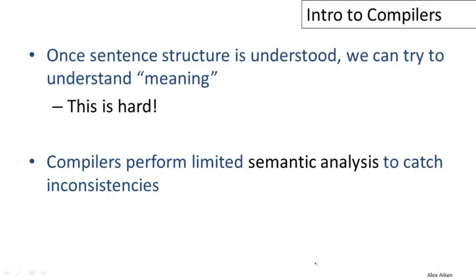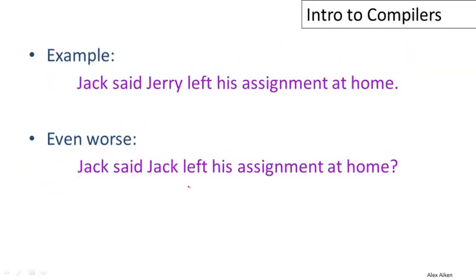Once we've understood the sentence structure, the next step is to try to understand the meaning of what has been written. And this is hard. We don't know how this works for humans still. We don't understand what happens after lexical analysis and parsing. We do know that people do lexical analysis and parsing in much the same way that compilers do. But understanding meaning is simply too hard for compilers. The first important thing to understand about semantic analysis is that compilers can only do very limited kinds of semantic analysis. The kinds of things that compilers generally do is try to catch inconsistencies. If the program is somehow self inconsistent, compilers can often notice that and report errors. But they don't really know what the program is supposed to do.